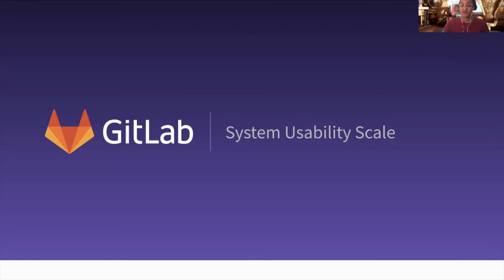The System Usability Scale is a quarterly initiative that helps us understand the needs, challenges, and pain points of GitLab users.